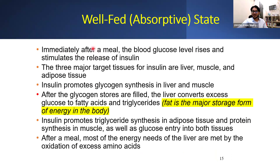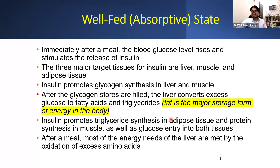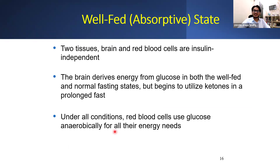Immediately after a meal, blood glucose levels rise and stimulate the release of insulin by the pancreatic beta cells. Insulin mainly acts on the liver, the muscle, and the adipose tissue — the specific effects on each organ are very different. Insulin promotes glycogen synthesis in the liver and the muscle. After the glycogen stores are full, the liver converts excess glucose to fatty acids and triglycerides — because fat is the major storage form of energy. Insulin promotes triglyceride synthesis in adipose tissue by stimulating LPL to extract fatty acids, and stimulating glycolysis. It also promotes glucose entry into the muscle cell and adipose tissue by stimulating GLUT4. The brain and red blood cells are insulin-independent because of GLUT1 and GLUT3.